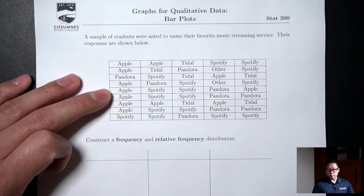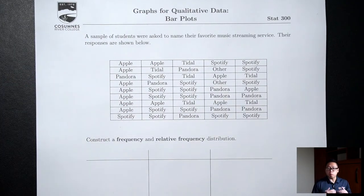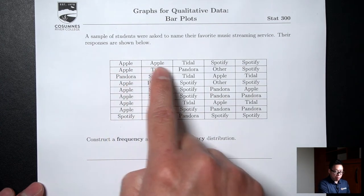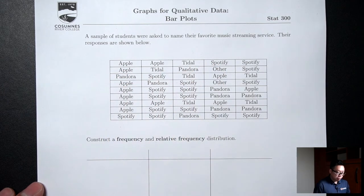Here's our raw data, and this is qualitative data. Remember, qualitative data are usually words, and that's exactly what we have here — Apple, Apple, Tidal, Spotify — words.